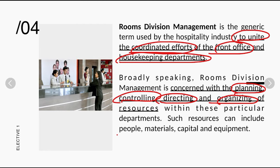The resources referred to here include people — our employees, the human resources — and of course materials. Within the hotel, we need many materials. For example, in the housekeeping department, we need to provide amenities and facilities. Next is capital: it is very important for a business to function — we need capital or money. And of course, equipment. Those four resources help the Rooms Division Management and the hotel operation.